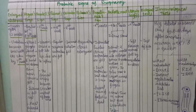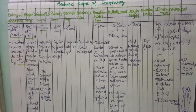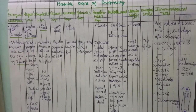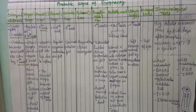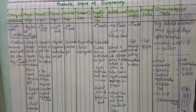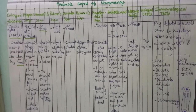Uterine souffle is a soft flowing murmur that almost synchronizes with the mother's pulse. It can be heard by the fourth month by auscultation on the side of the uterus just above the inguinal ligament.